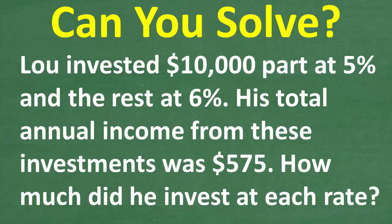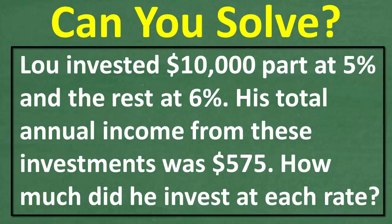Let's take one more quick look at the question. So, Lou is investing $10,000, and he's going to put part in a 5% investment and the rest in a 6% investment. Now, his total annual income from these investments is $575.